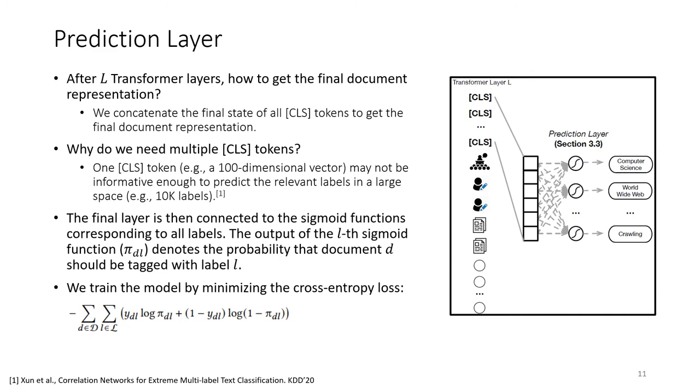So after our transformer layers, we get the final representation of each token. Then the problem becomes how to get the final document representation. We simply concatenate the final state of all CLS tokens to get the final document representation. Then let me answer the question: why do we need multiple CLS tokens? This is inspired by a KDD 2020 work. Actually, one CLS token, for example, a 100-dimensional vector, may not be informative enough to predict the relevant labels in a large space.